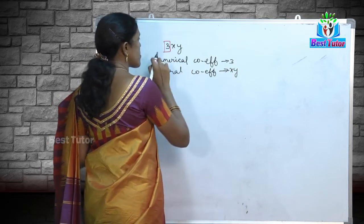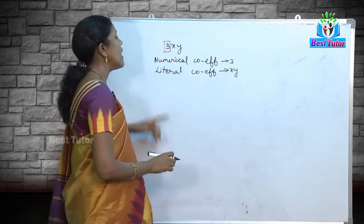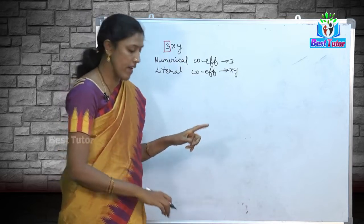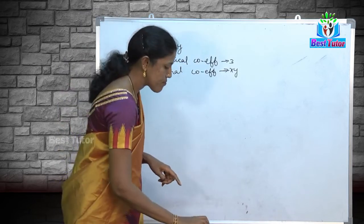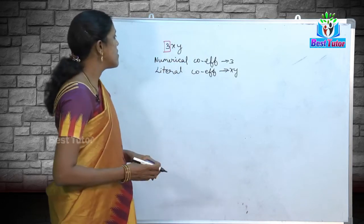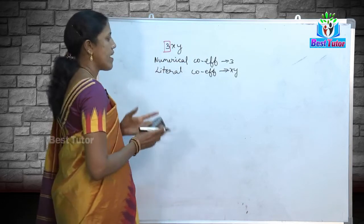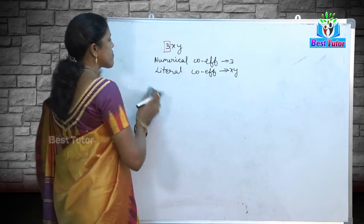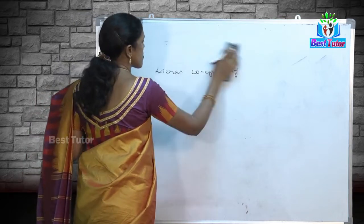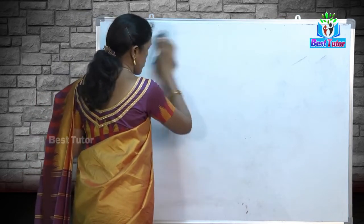The literal coefficient relates to the variable letters. So the literal coefficient of 3xy is xy. The numerical coefficient is 3 and the literal coefficient is xy.